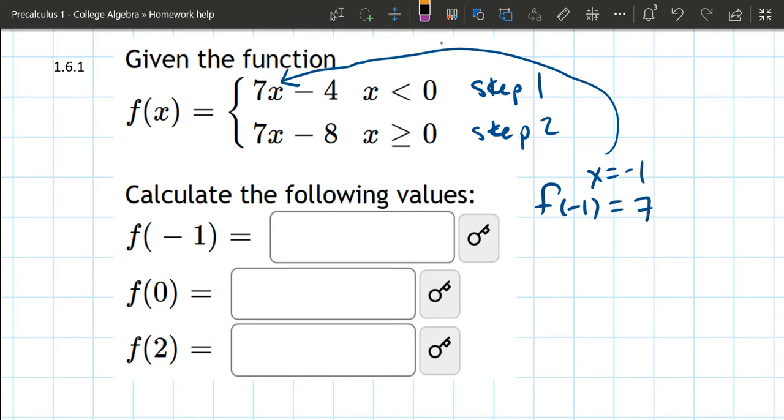So it's 7 times negative 1 minus 4, and then you can calculate that out. That's the first one, and that answer will go right here. Now we're going to go to the second one.